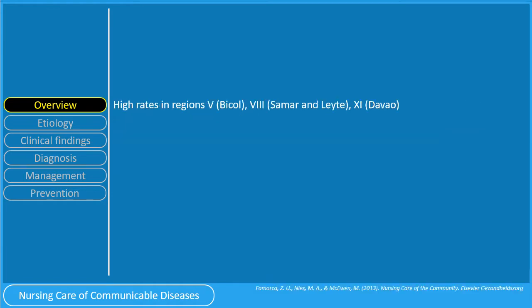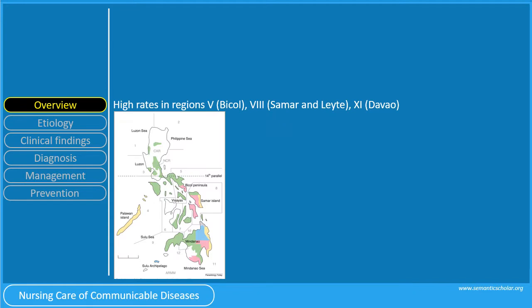It is endemic in Region 5, Bicol; Region 8, Samar and Leyte; and Region 11, Davao. There are also other areas in the Philippines where elephantiasis or filariasis are recorded, as seen in this map.